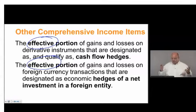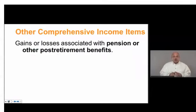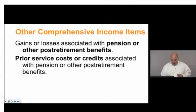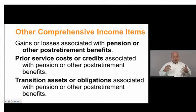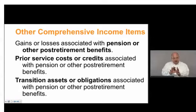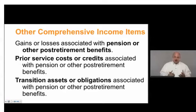Also included are gains or losses associated with pension or other post-retirement benefits, prior service costs or credits associated with pensions or other post-retirement benefits, and transition assets or obligations associated with pensions or other post-retirement benefits. What the standard is doing is taking these potentially very large gains or losses connected to a pension plan and saying: don't put it on the income statement — put it in other comprehensive income and slowly release it to income.